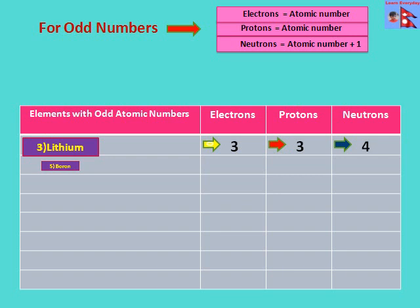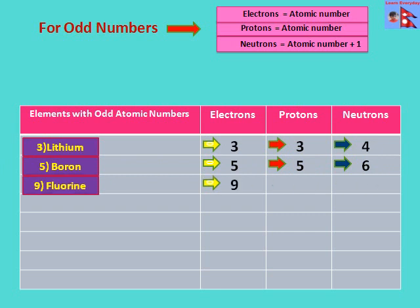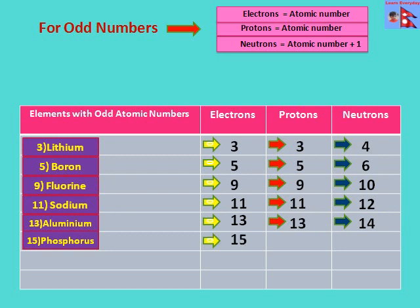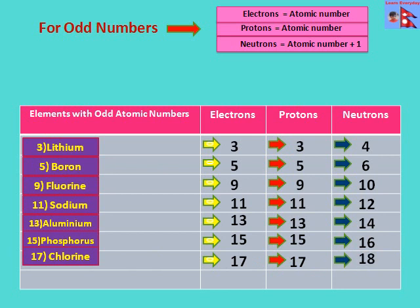In boron: 5 electrons, 5 protons, but 6 neutrons. In fluorine: 9 electrons, 9 protons, but 10 neutrons. In sodium: 11 electrons, 11 protons, but 12 neutrons. In aluminium: 13 electrons, 13 protons, but 14 neutrons. In phosphorus: 15 electrons, 15 protons, but 16 neutrons. In chlorine: 17 electrons, 17 protons, but 18 neutrons. In potassium: 19 electrons, 19 protons, but 20 neutrons.